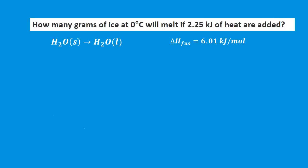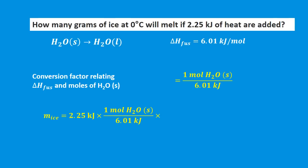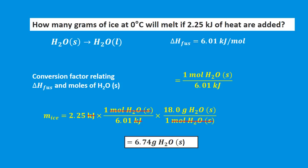Problem: How many grams of ice at 0°C will melt if 2.25 kilojoules of heat are added? Given the molar heat of fusion of water is 6.01 kJ/mol, we first convert kilojoules to moles using the conversion factor (1 mol / 6.01 kJ), then convert moles to grams using the molar mass of water (18.0 g/mol). This gives 6.74 grams of ice that will melt.